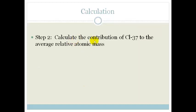Next, we know that the contribution of chlorine-37 is 25%. So we've got 25 over 100 times by 37, which gives us 9.25.